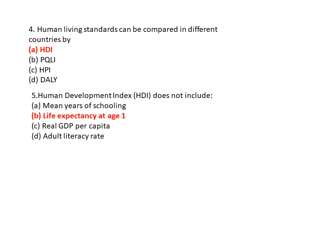Question 5: Human Development Index doesn't include? Option A is mean years of schooling, option B is life expectancy at age 1, option C is real GDP per capita, and option D is adult literacy rate. So option B is the correct answer — life expectancy at age 1.